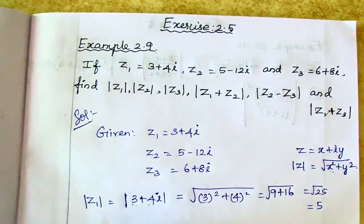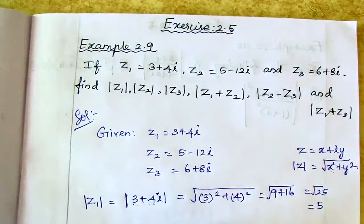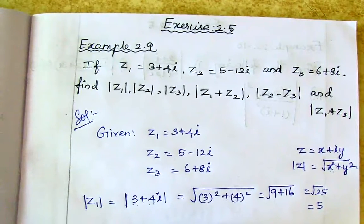So modulus of z1 is equal to 5. Now modulus of z2: modulus of 5 minus 12i.